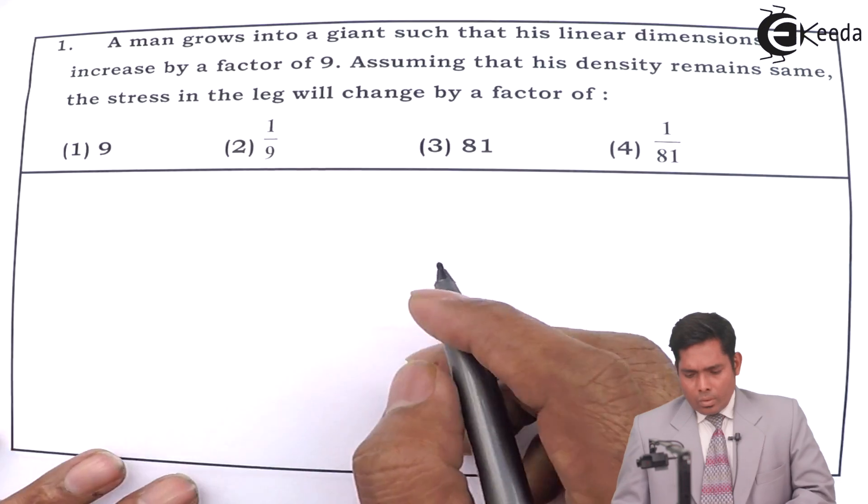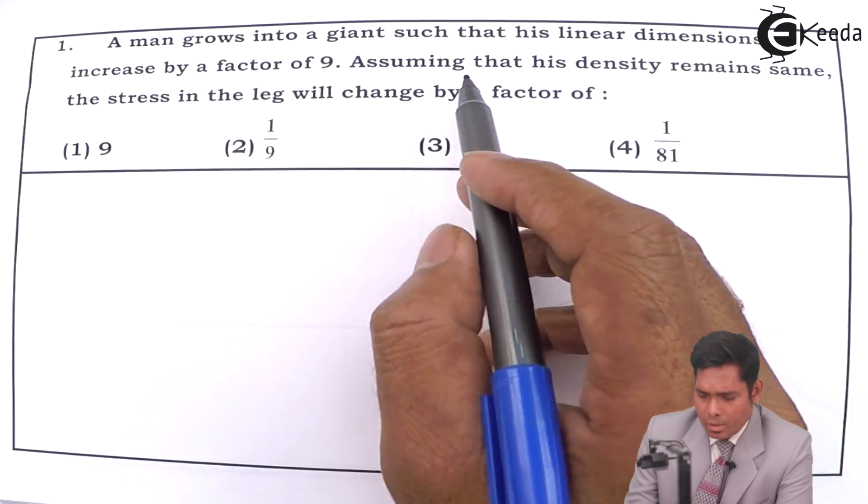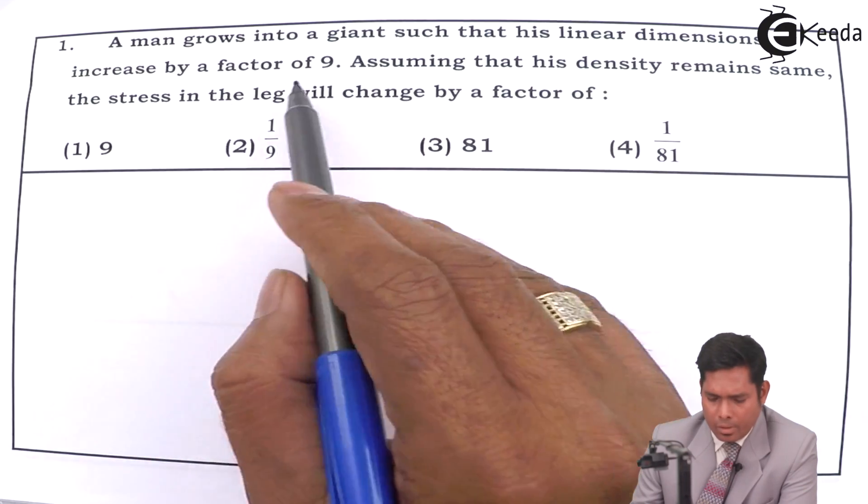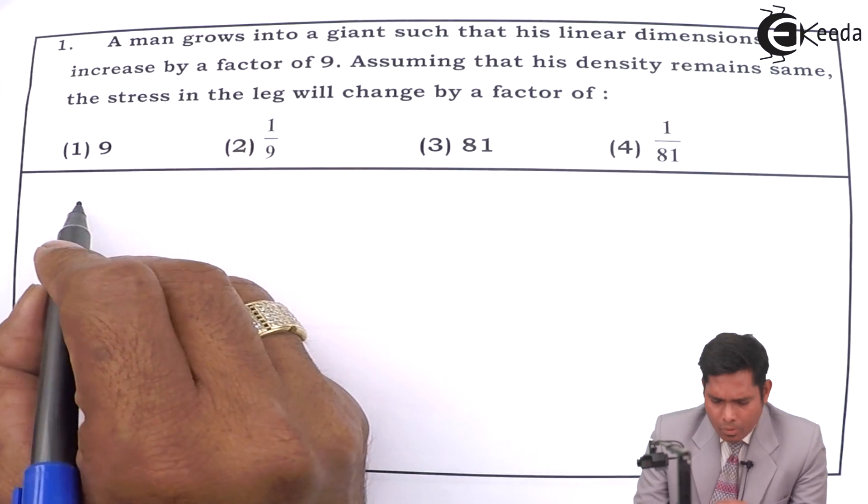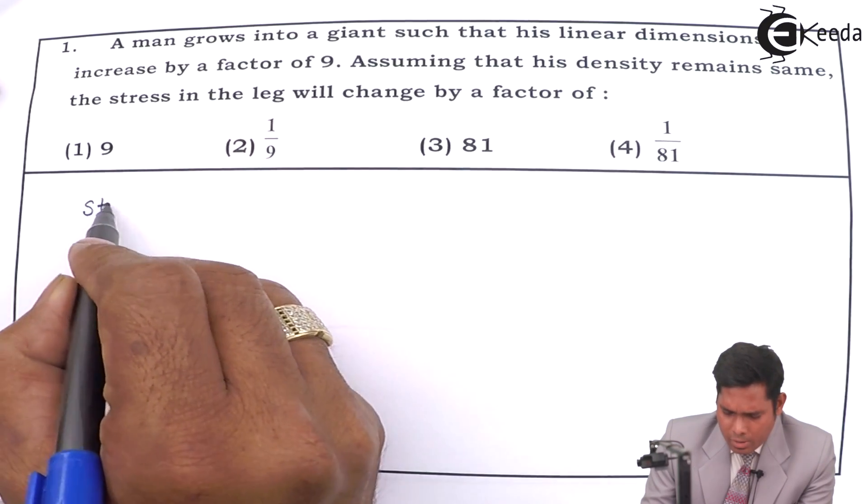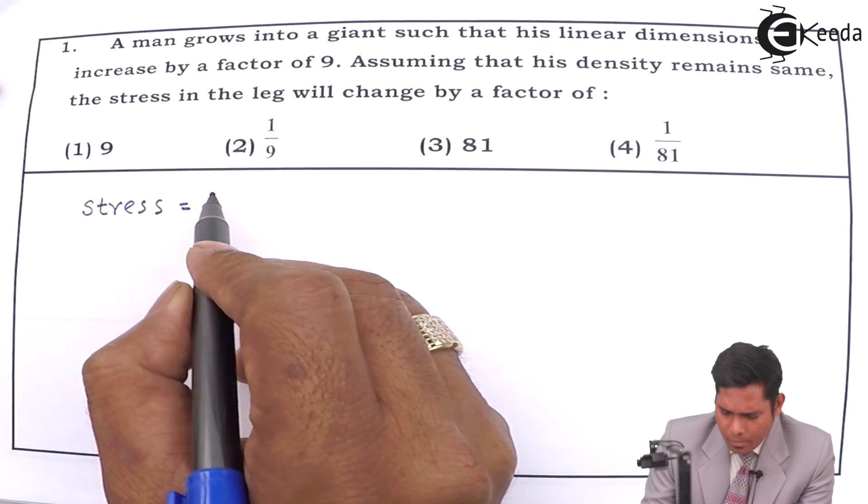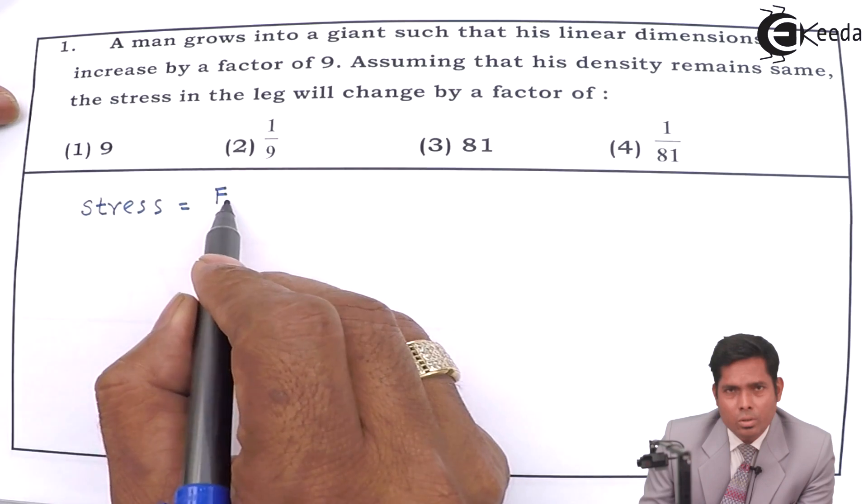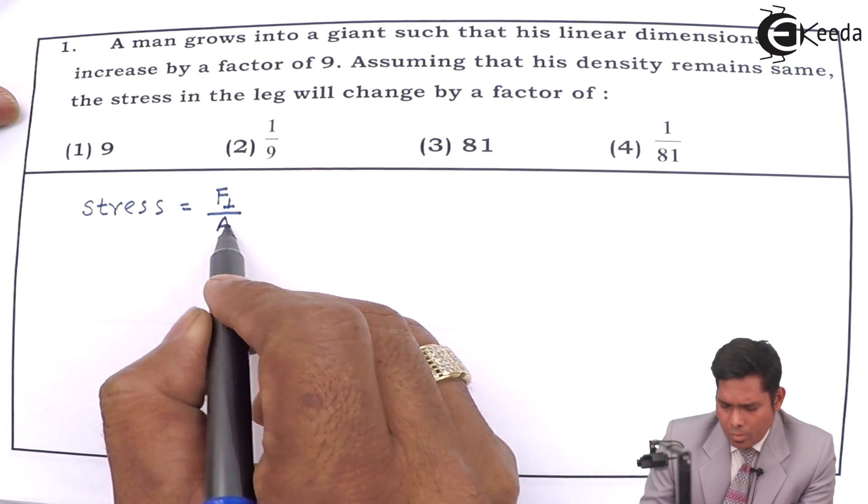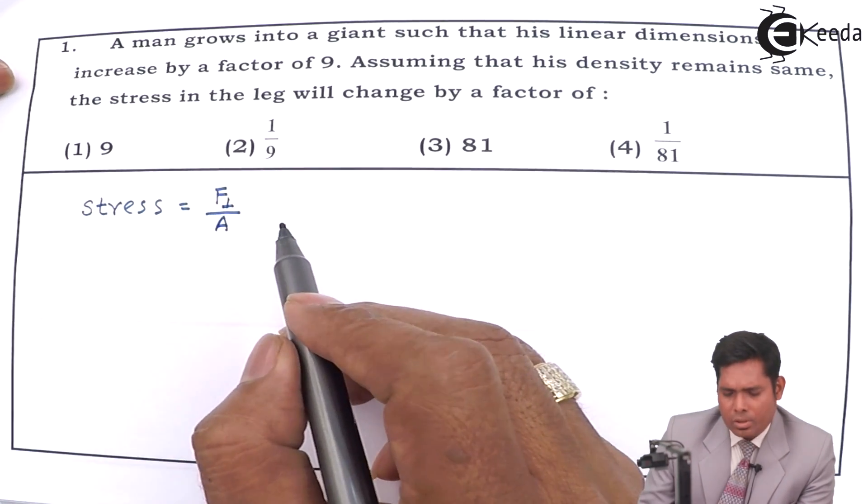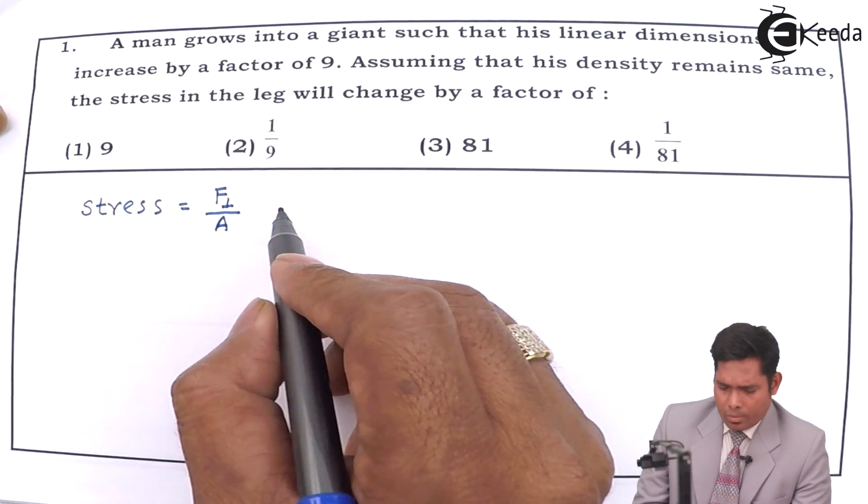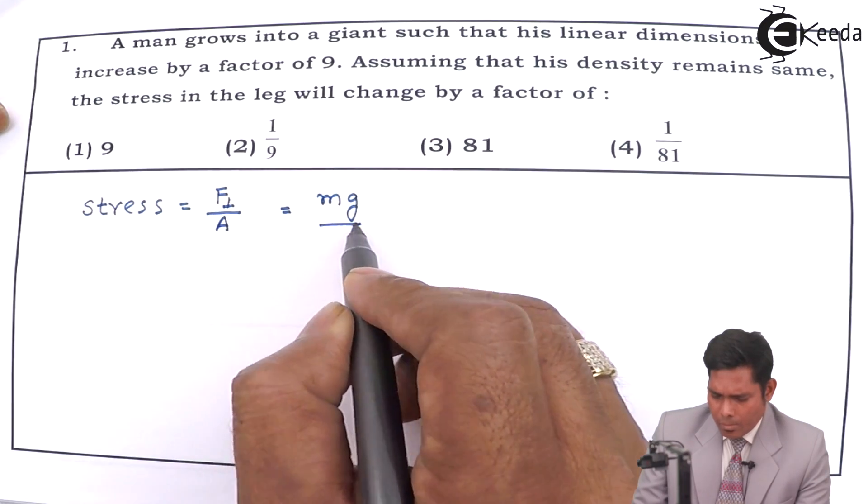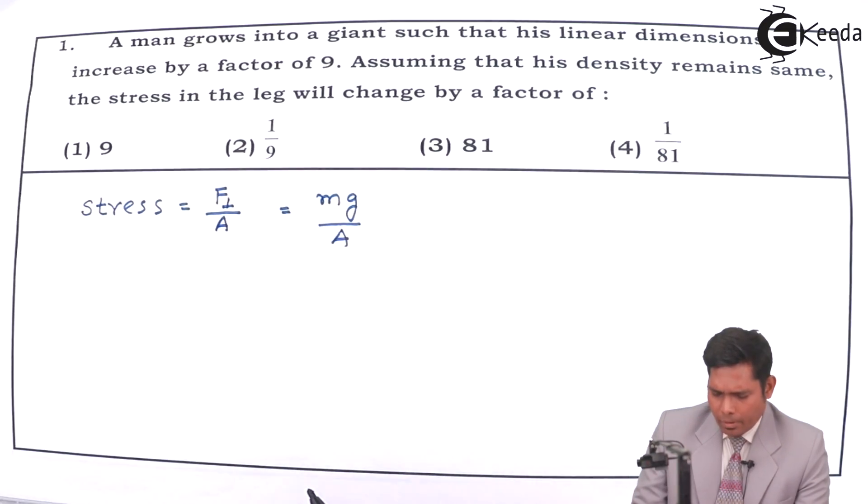So now the stress is to be found, okay. Now, we know that the stress is force, perpendicular force upon the area cross section. Now, this is mg divided by area.